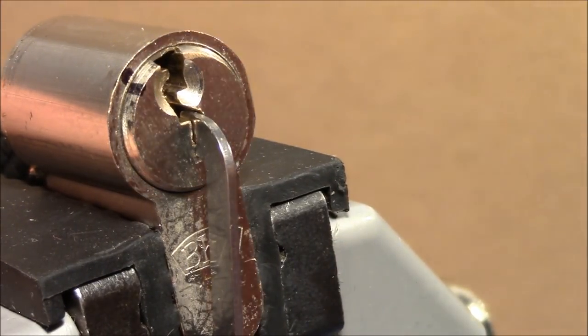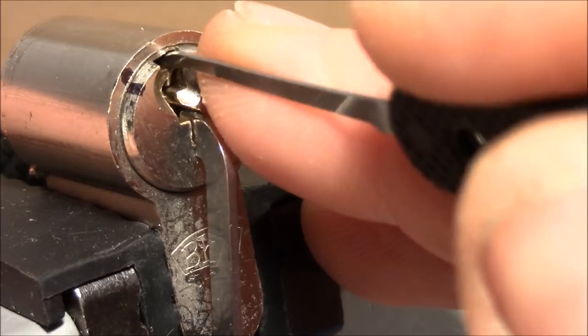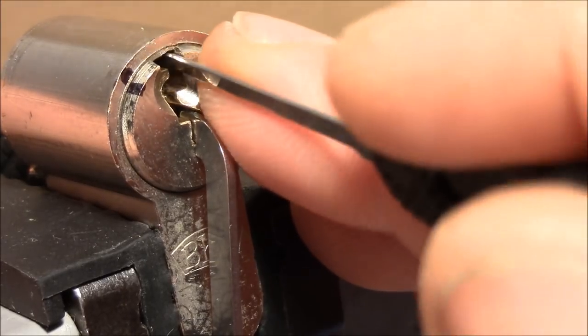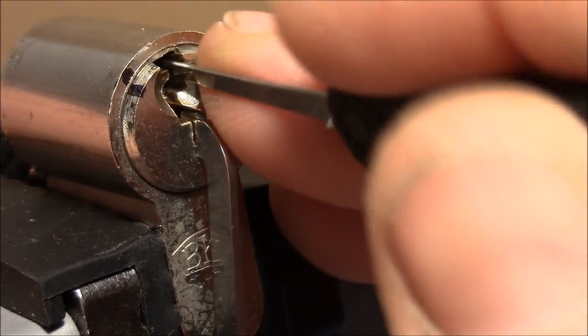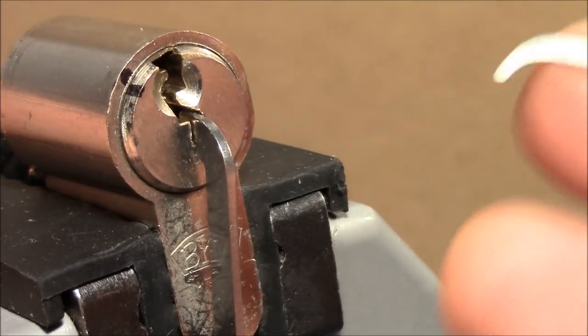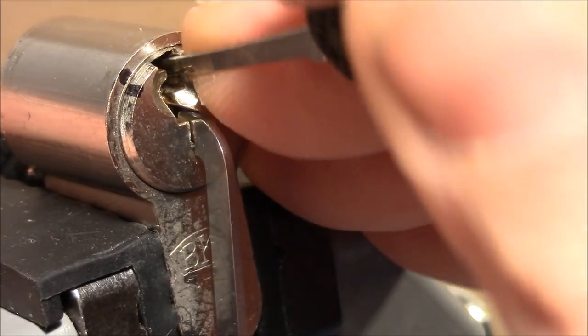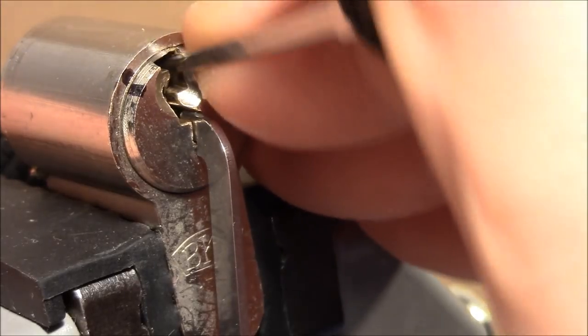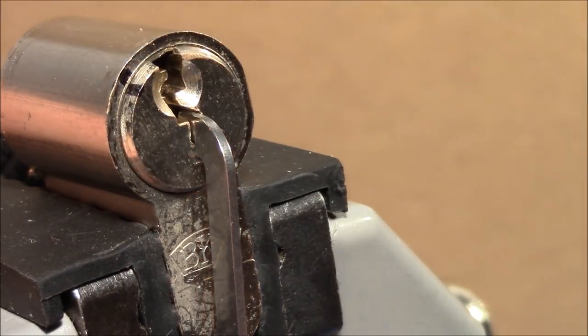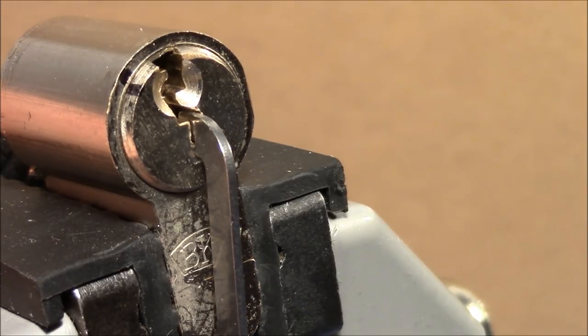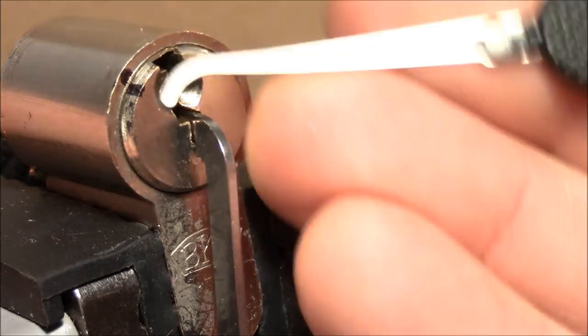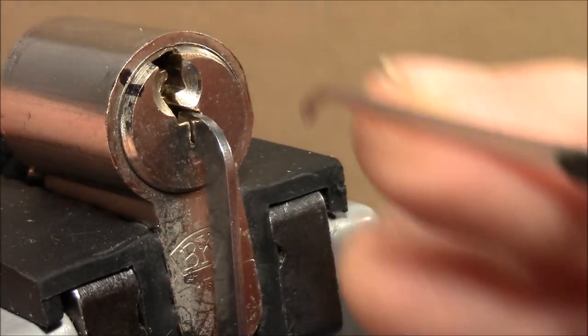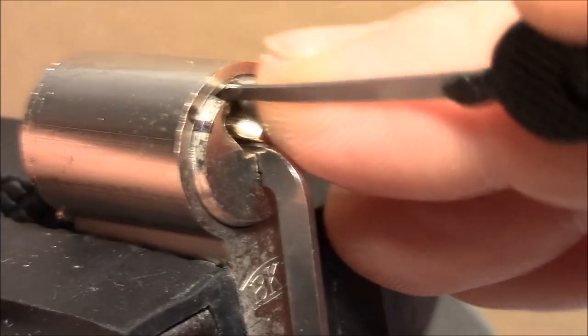And now it's time to set the spool. So 1 is springy and 2, I touched 2 and the false set increased. So we've got 2, I feel a little bit of counter rotation here as a spool and also 1. Let me see. I'm going to use the deepest hook that I can get in to pick number 1. So let's do that.